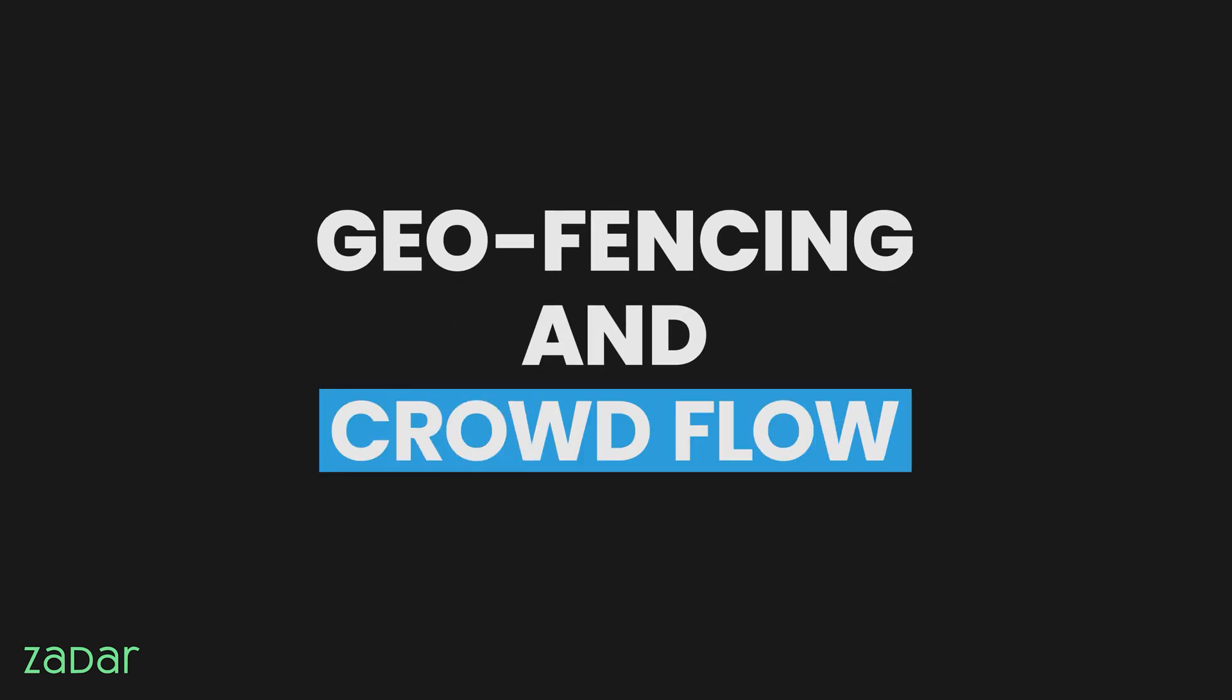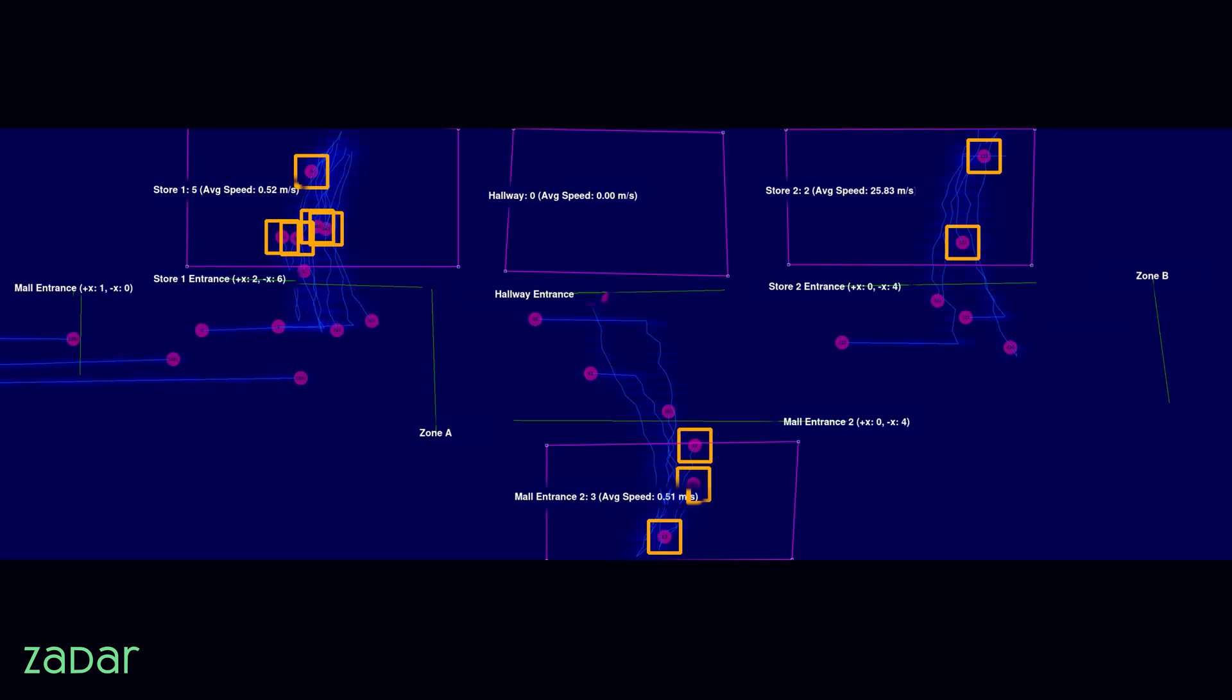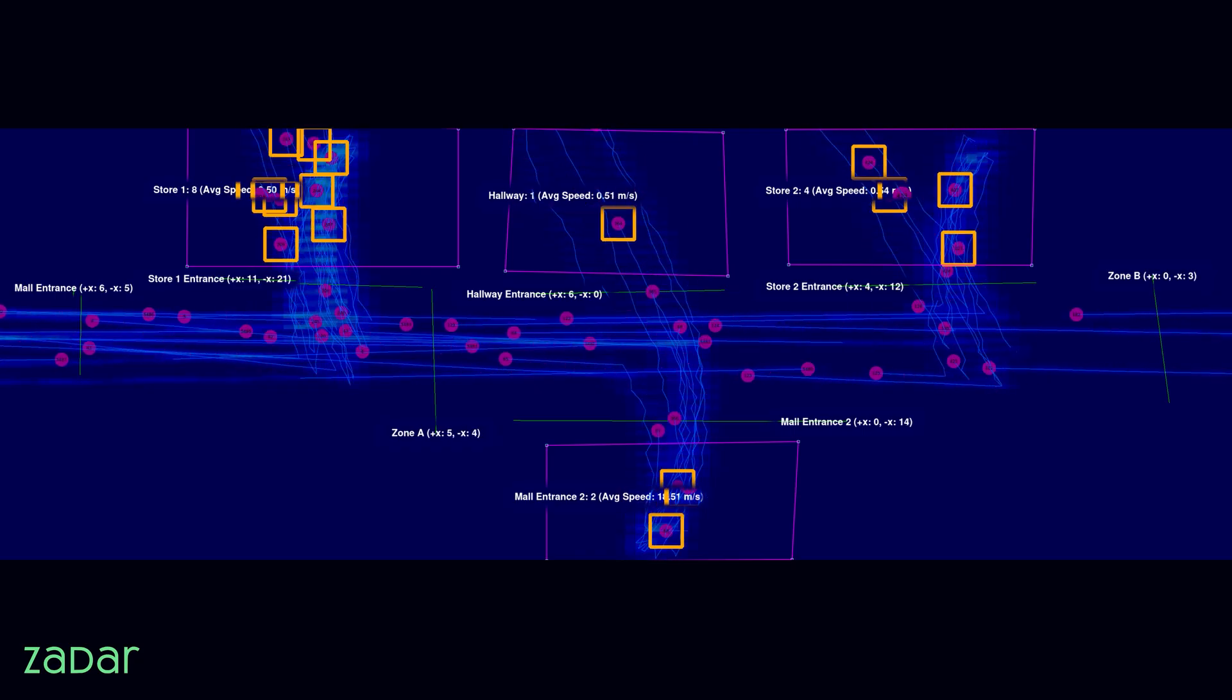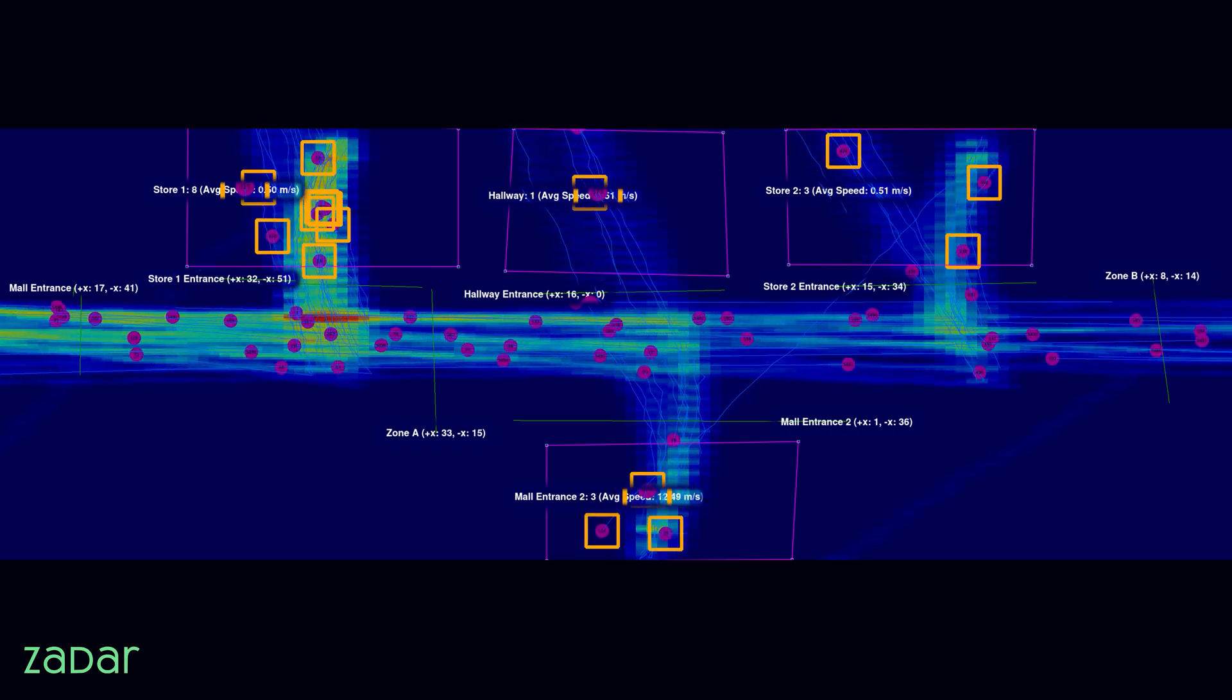Geofencing and crowd flow. Define zones. In this scenario, the user has defined four pink zones within which the radar will count the moving objects. The user has also defined six green lines as entrance zones, and the number of inbound and outbound objects crossing them will be separately counted by the radar.